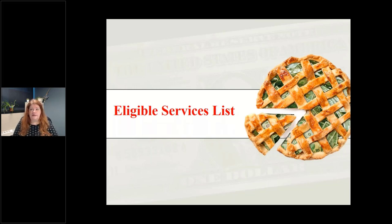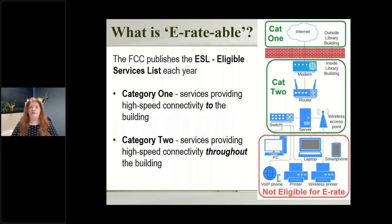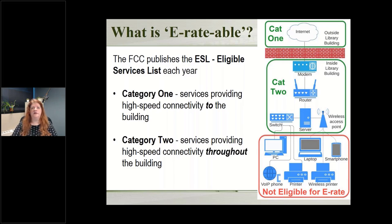What can you get a discount on? We're going to talk about the eligible services list — what is E-rateable. Every year the FCC publishes a new eligible services list, the ESL, posted on their website. Because there's a new funding year every year, there is a new eligible services list every year. When you're doing E-Rate, make sure you look at the appropriate eligible services list for that year because things do change — they add new technologies and tweak things as they change over time.